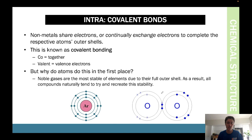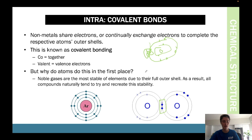Oxygen, for example, has two electrons in its first shell and six in its second shell, leaving two spare spots. It wants those spots filled. So what it does is share electrons — sharing four electrons total, two from each atom. When they share, they both end up with a full outer shell. That is how covalent bonding works.